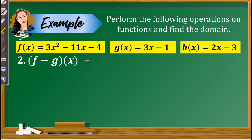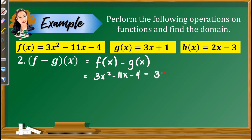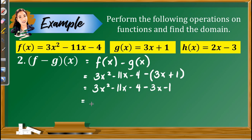Second example, we have f minus g of x, rewritten as f of x minus g of x. So we have 3x squared minus 11x minus 4, minus the quantity 3x plus 1. Always remember, in dealing with subtraction or difference of functions, it is necessary to put parentheses on the second function, because you need to distribute the negative to every term. So we have 3x squared minus 11x minus 4 minus 3x minus 1. Combining like terms gives us 3x squared minus 14x minus 5.